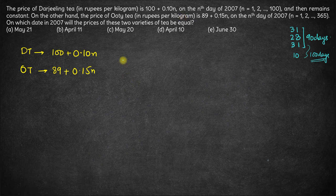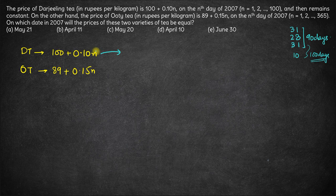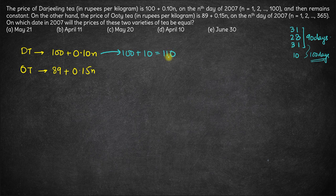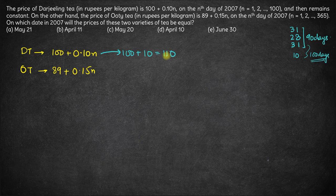Let's calculate the price of Darjeeling tea at the end of 100 days. It will be 100 + 0.1 × 100 = 10, so 110. On April 10th, the price will be 110, and after April 10th the price will be 110 only for Darjeeling tea.